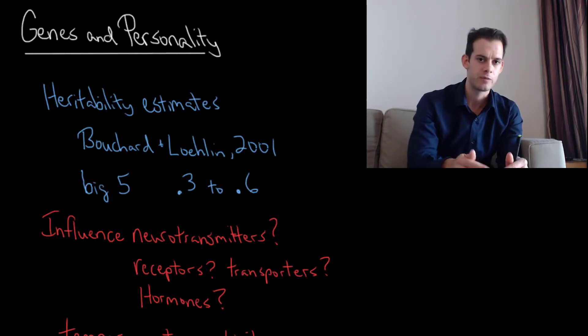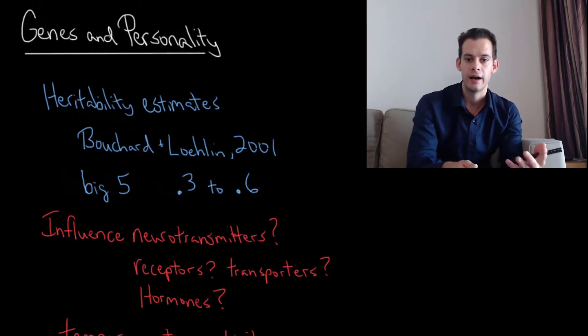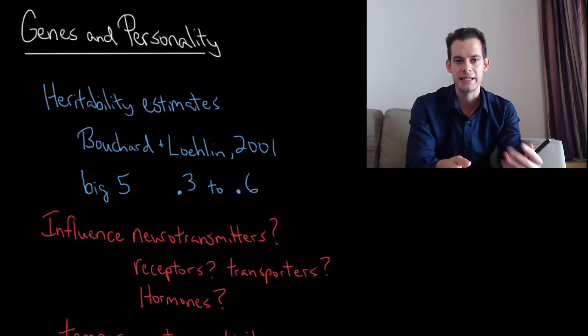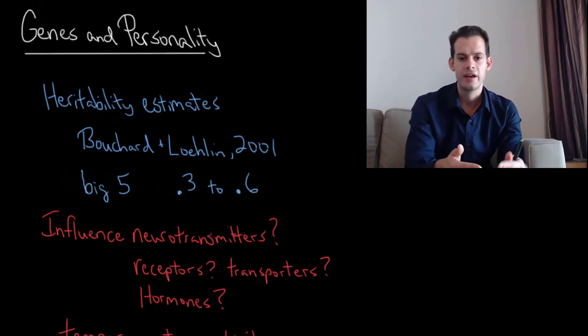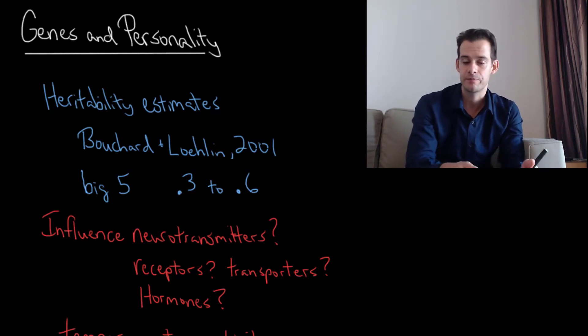So what do these numbers mean? It's important to remember that heritability is about groups of people, not about individuals. It's not saying that 40% of your level of openness came from your genes. What it means is that when we ask why do people differ in openness, about 40% of the explanation is that people have different genes. That's the first thing to keep in mind about these heritability estimates.